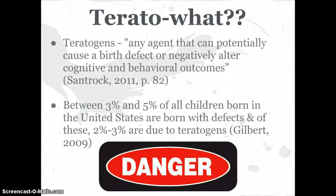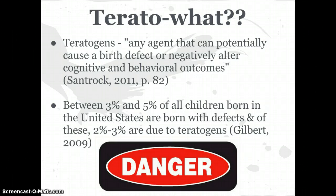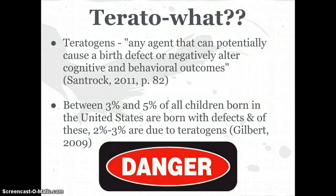First, I'm going to define what a teratogen is. Some people may be a little intimidated by this word because it's not something they hear in their daily lives. An easy way to remember is that teratogen comes from the Greek word 'terra,' which means monster. Santrock, on page 82 of the text, explains that teratogens are any agent that can potentially cause a birth defect or negatively alter cognitive and behavioral outcomes. This can be anything that the pregnant mother drinks, eats, or encounters.